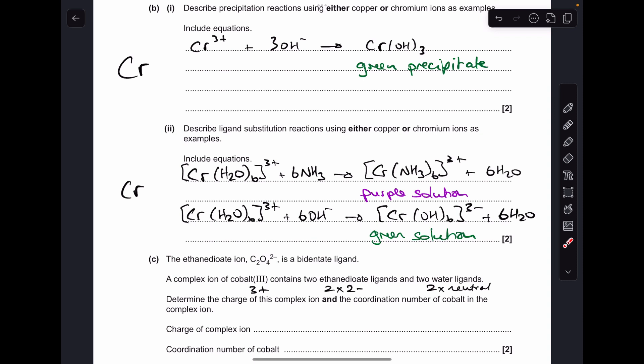Moving on to part C. We've got this complex of cobalt 3+, and it contains two ethanedioate ligands and two water ligands. I've just written the charges of the three parts underneath. Cobalt 3+ is 3+. Two ethanedioate ligands would be two times the 2-. The charge was given there. And obviously water is neutral. So the overall charge for this complex is going to be 3+ and 4-, which is 1-.